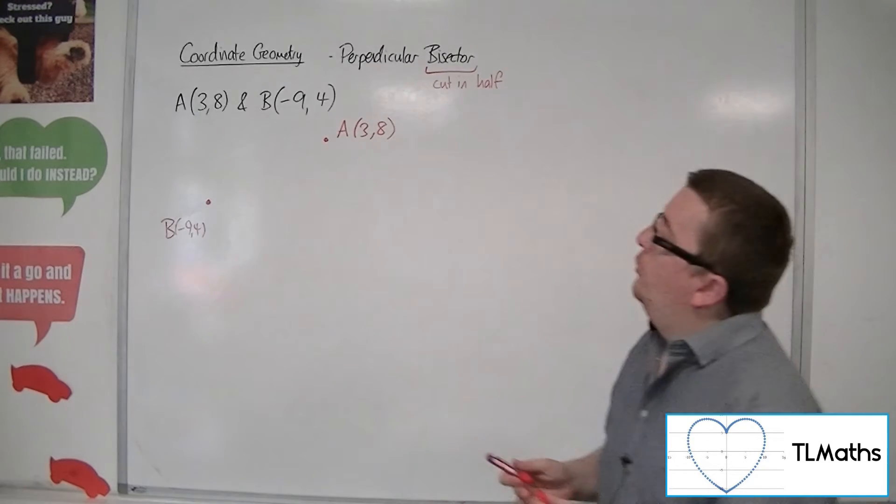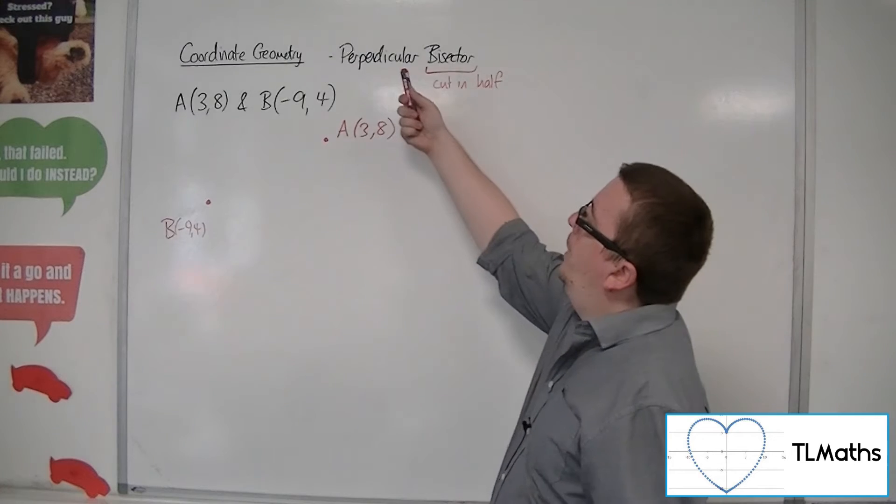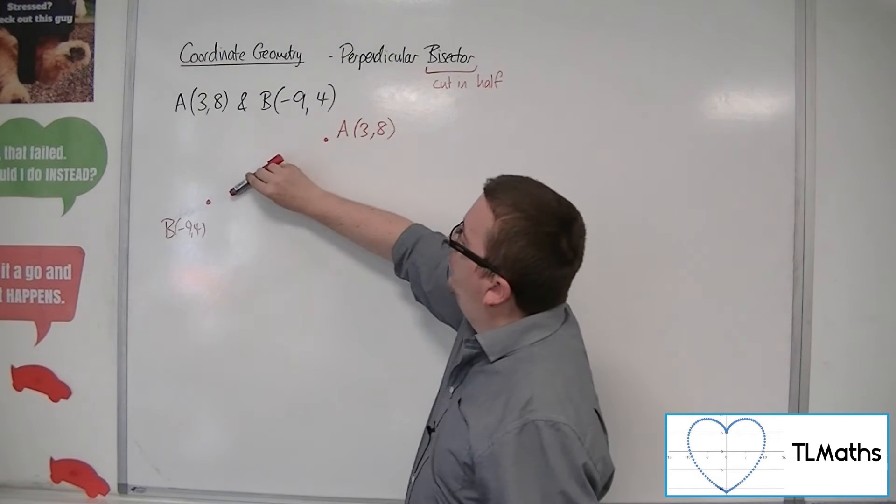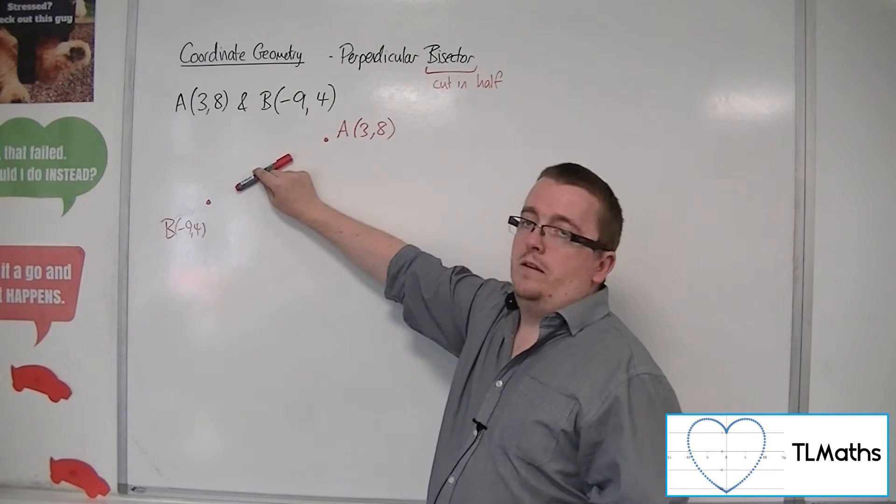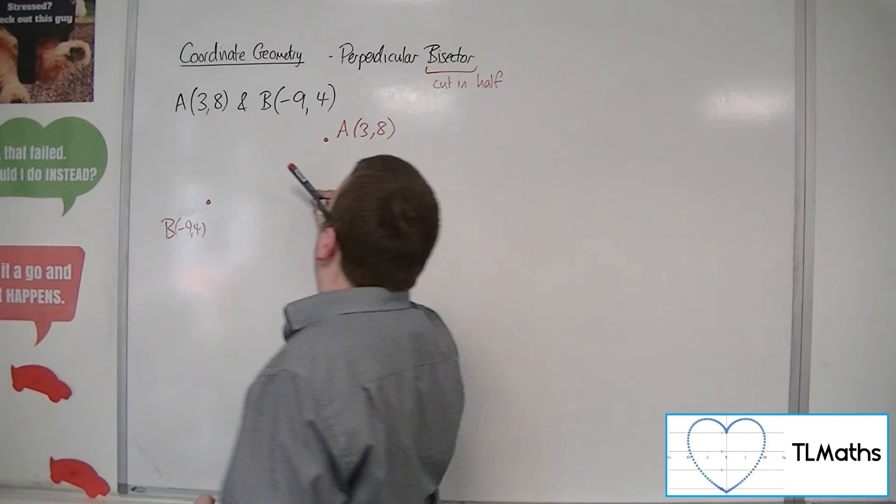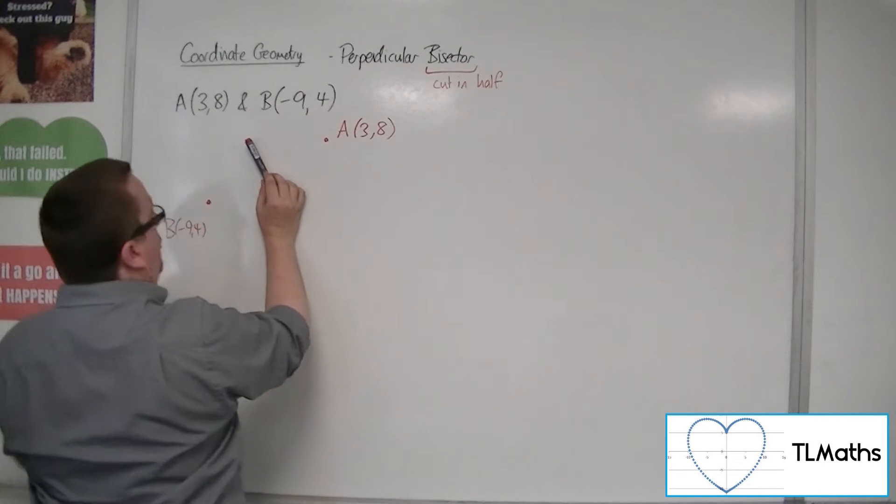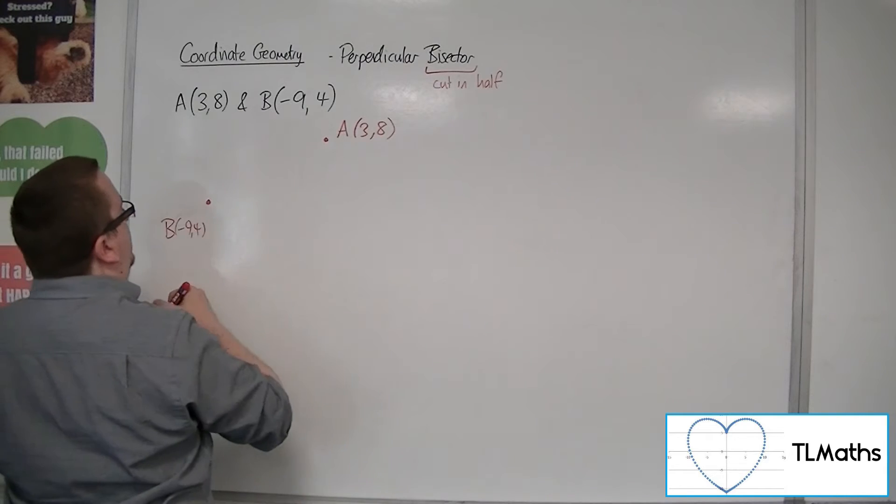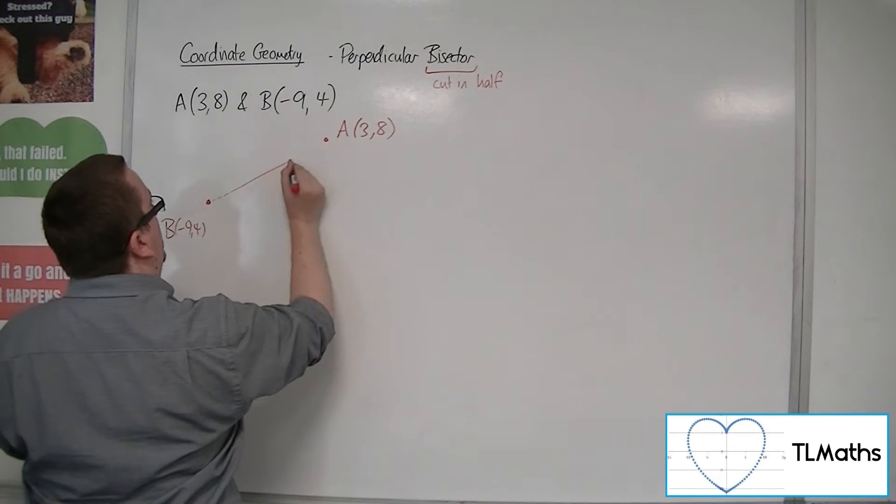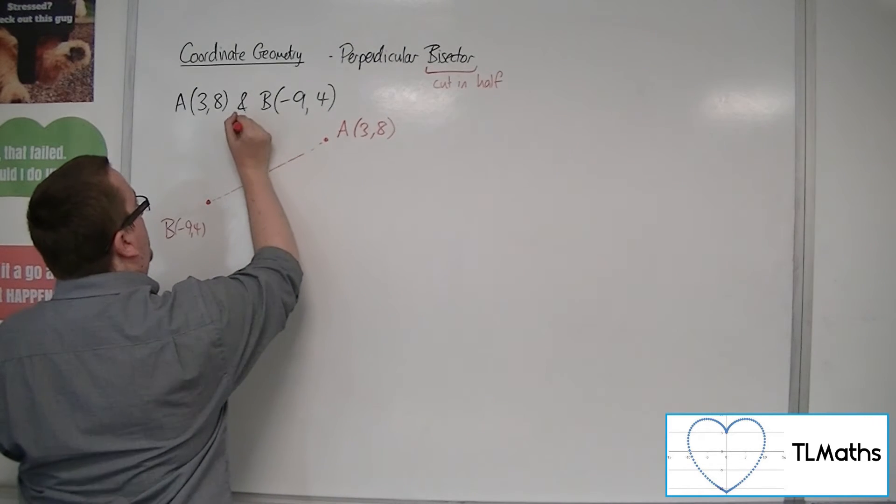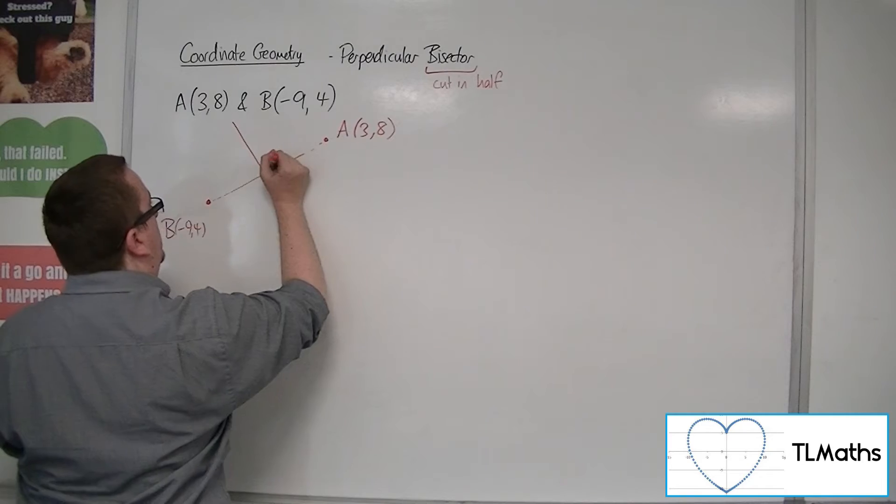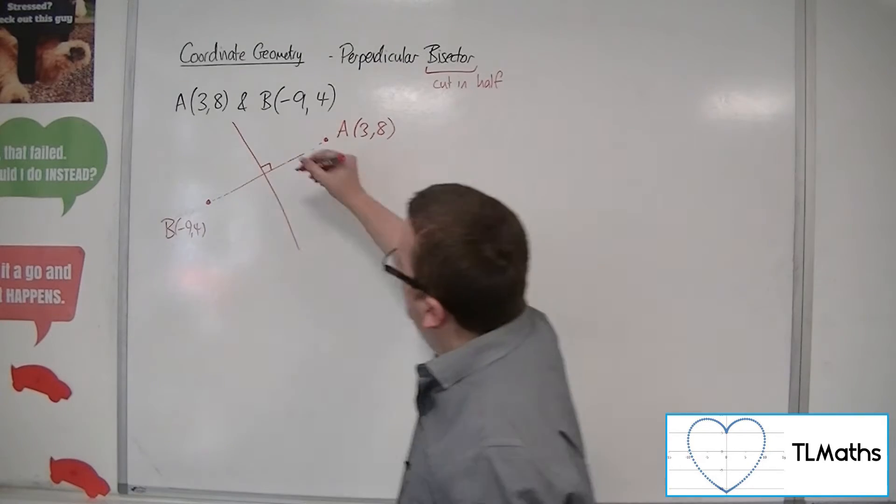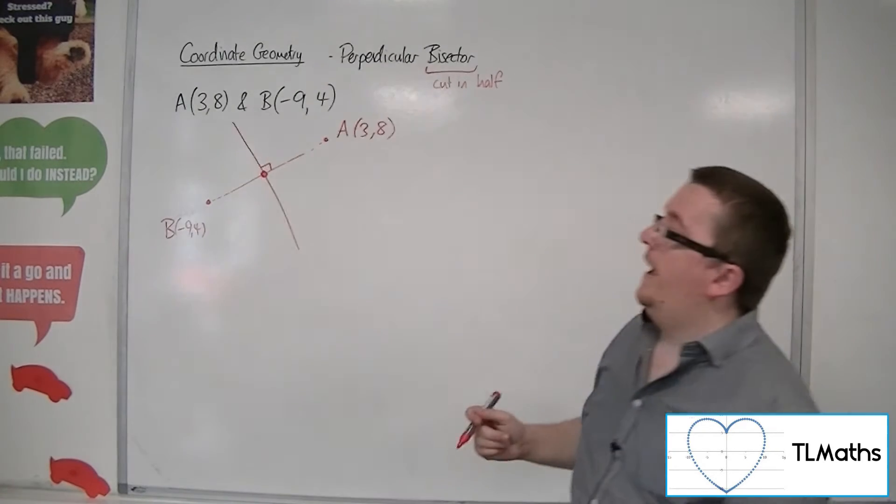So what I'm looking for is the line that is perpendicular to the one that will join A and B. So a line that is perpendicular to this chord that will cut that chord in half. In other words, it would be a line that looks something like this, cutting through the midpoint of A and B.